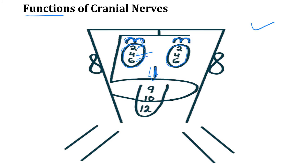The oculomotor nerve (CN3) is responsible for eye movements, eyelid opening, pupillary constriction, and lens accommodation. Now we will talk about cranial nerve 5, the trigeminal nerve. We draw a 5 covering the whole face and cutting the tongue in two halves. This is a mixed cranial nerve — both sensory and motor. Its sensory functions include facial sensation and somatosensation to the anterior two-thirds of the tongue. Its motor function is to open and close the jaw.